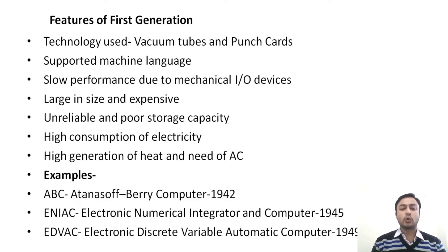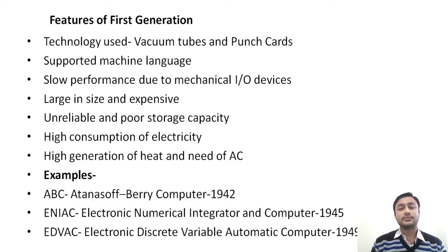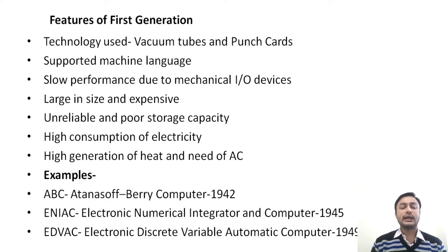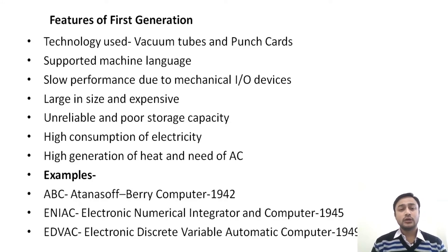The first generation computer was unreliable and had poor storage capacity. It was unreliable because it consumed a lot of electricity and produced a lot of heat. The first generation computers consumed more electricity and increased heat production, which caused technical issues making them unreliable. Storage at that time used punch cards. Nowadays we use pen drives, hard disks, and external hard disks, which are reliable and have high storage capacity compared to the first generation.